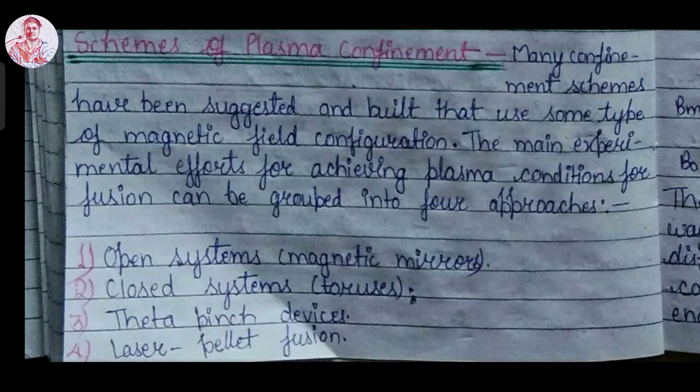Many confinement schemes have been suggested and built up that use the magnetic field configuration. The main experimental efforts for achieving the plasma conditions for fusion can be grouped into four approaches. First approach is open system or magnetic mirrors. Second is closed system or toruses. Third is theta pinch devices. Fourth is laser pellet fusion. We will discuss all of these one by one.